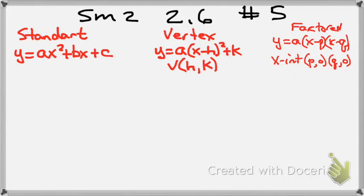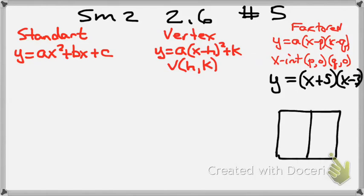We could just use the box method. We have y equals x plus 5 times x minus 3. We'll put x here, 5 here, x here, and negative 3 there. It doesn't matter if you put x minus 3 on top and x plus 5 on the side. We want one binomial on top and one on the side. Now we just do this like our times tables.